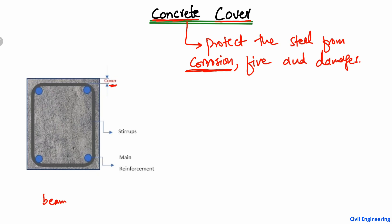You can see here in the picture — for example, it is a beam cross-section. Here, concrete cover is provided to the reinforcement bar. The reinforcement bar is shown, and some concrete cover is provided, maybe a few millimeters: 20 millimeters or 40 millimeters, depending on the structural design.